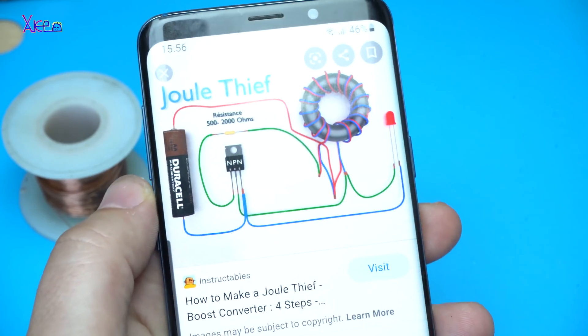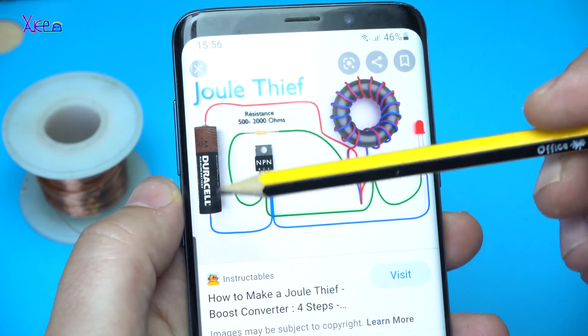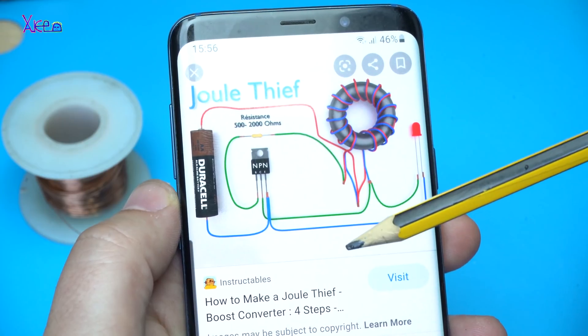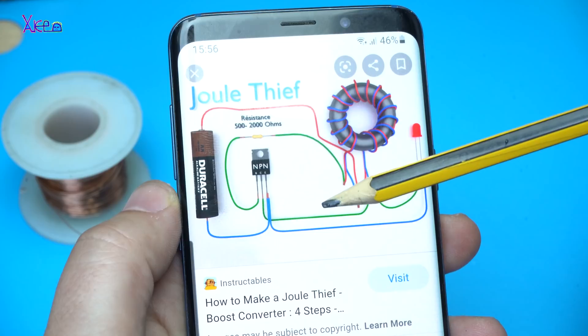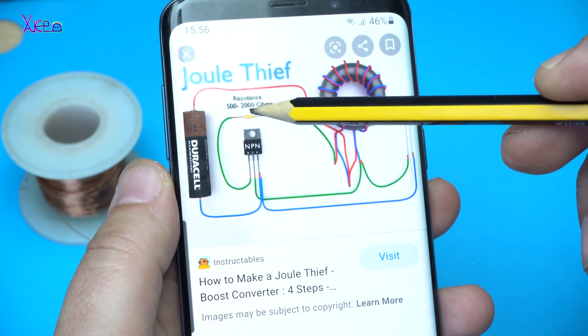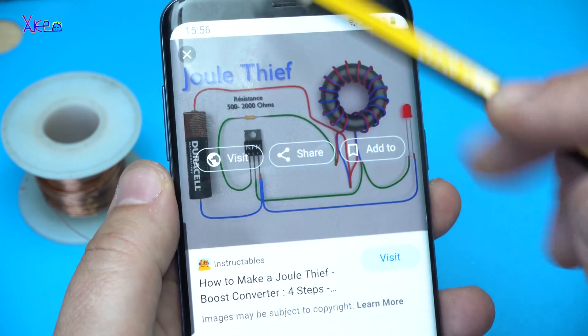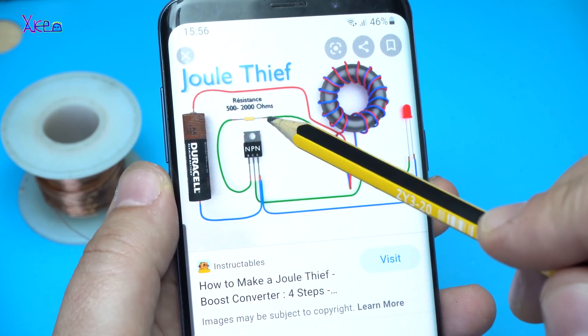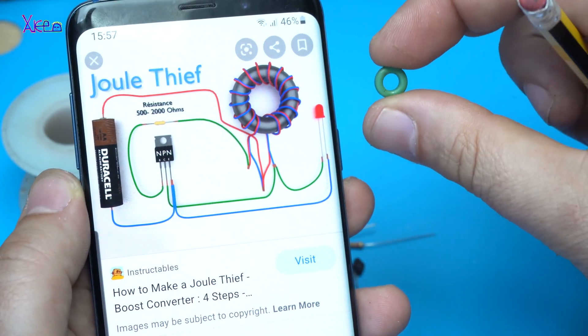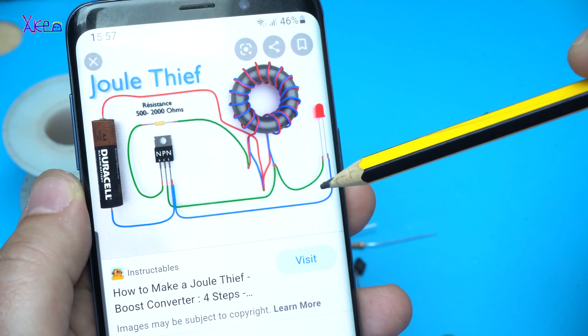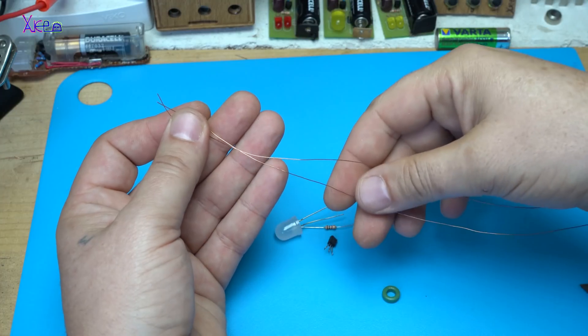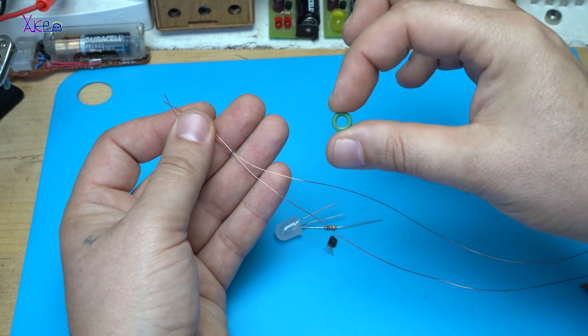Here it is the circuit diagram. We have 1.5 volt battery. To mention that this circuit will work from 0.7 volts maximum to 1.5 volts. The NPN transistor. 1K ohm resistor here. You can use it from 500 ohms up to 2K ohm resistor. The core. This small thing. And the LED. The circuit diagram is simple. How to make the coil with the ferrite core.